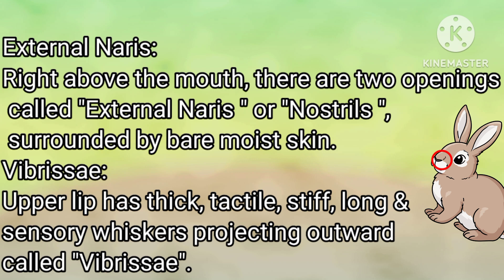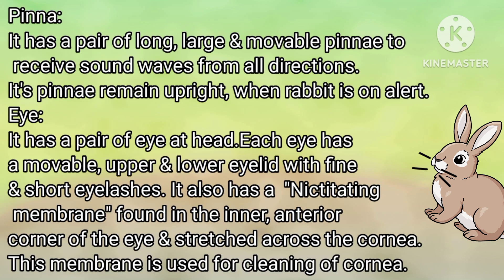External nares: Right above the mouth, there are two openings surrounded by moist skin, called external nares or nostrils. Vibrissae: The upper lip has thick, tactile, stiff, long and sensory whiskers projecting outwards called vibrissae.